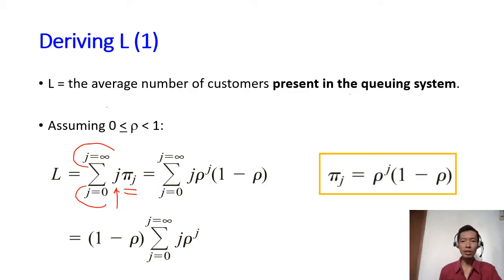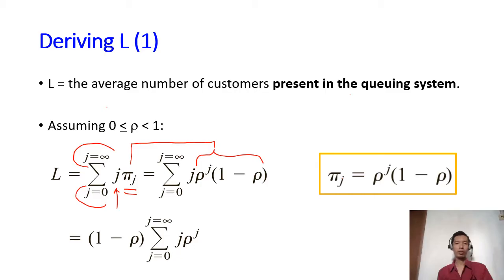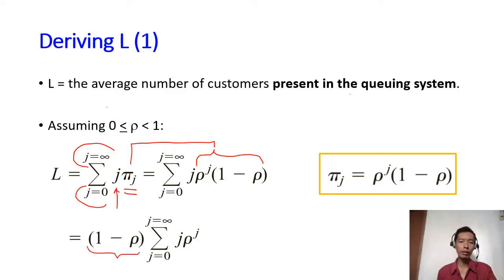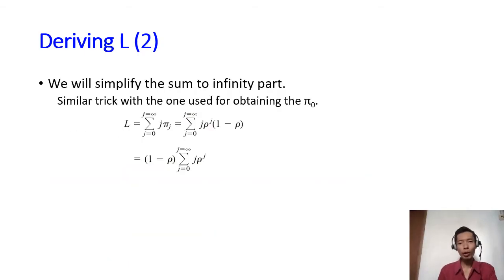From the previous slide, we have obtained the formula for pi_J, so we replace pi_J here with that formula. We then take out the (1 minus rho) factor because it doesn't have the index J, so it can come out from the summation. Here's the formula for L. From this formula, we are going to simplify the summation part, because it contains a summation up to infinity, which is not very practical to calculate.